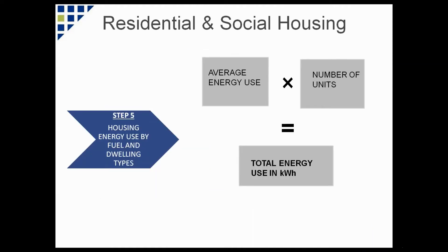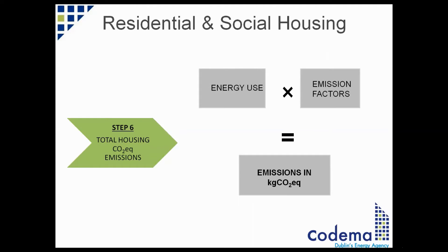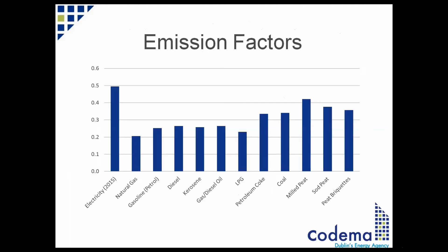A BER certificate is required if a house is being sold, let, is new, or has received an energy grant from SEAI. The average energy use is multiplied by the number of units, which gives the total energy use in kilowatt hours. Step 6 is converting this energy use to CO2 emissions, done by multiplying the energy use by the emission factors, which results in emissions in kilograms of CO2. Emission factors are dependent on the type of fuel, meaning different fuels have different emission factors. For example, renewable energy like photovoltaics would have an emission factor of zero, meaning when energy from renewables is converted to CO2 emissions it yields no emissions.